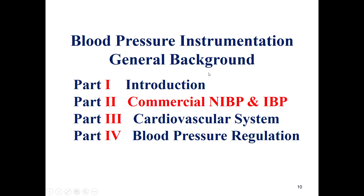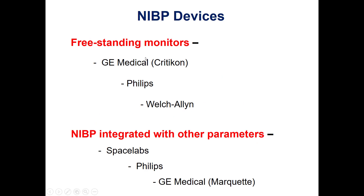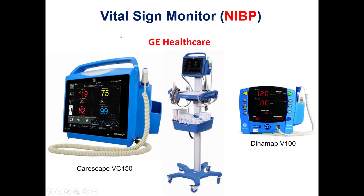Some commercial applications for blood pressure measurement. Non-invasive blood pressure readings can be a freestanding monitor or integrated with other parameters in one device. Major manufacturers include GE Medical, Philips, Welch Allyn, Space Labs, and others. A vital sign monitor is a medical device with three parameters: non-invasive blood pressure, pulse oximeter readings, and temperature readings.